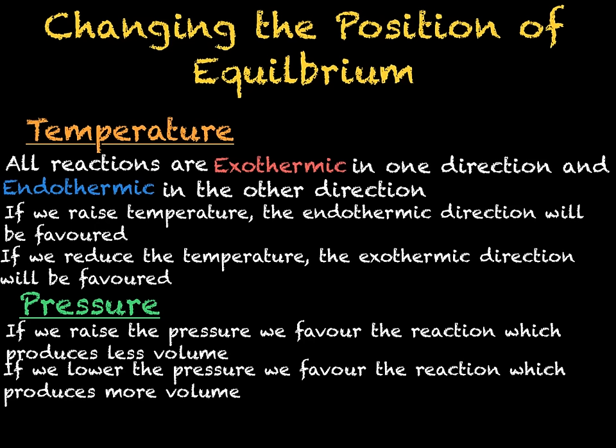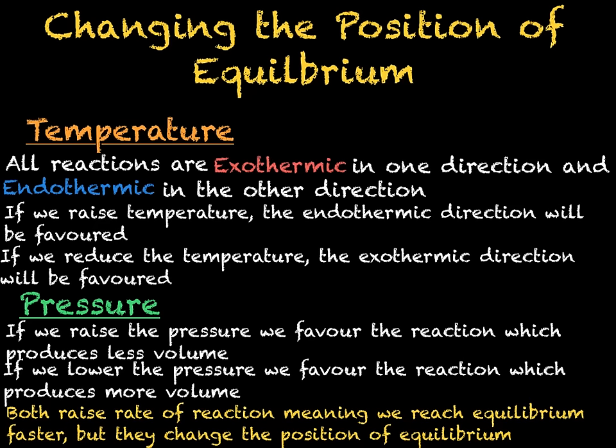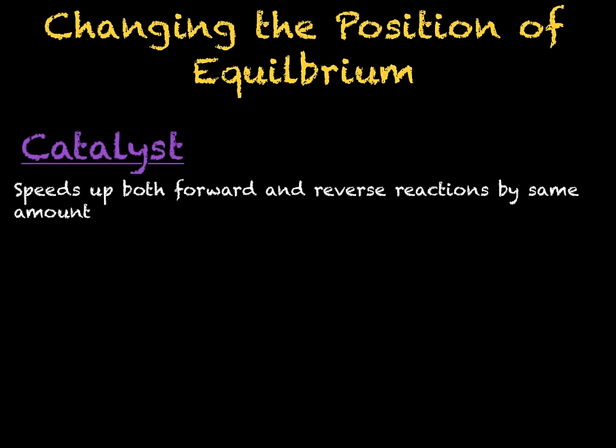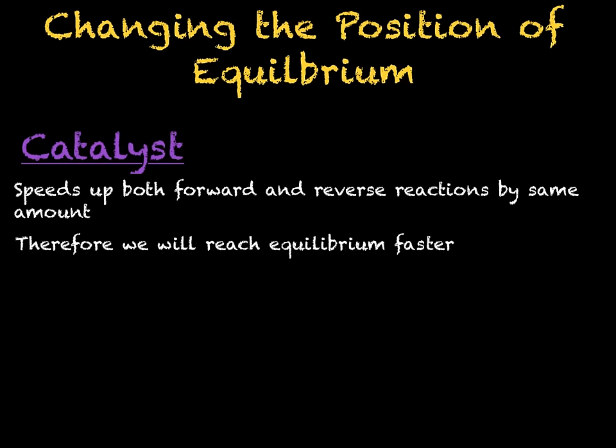Raising the temperature and pressure will also increase the rate of reaction, meaning that we will reach equilibrium faster. However, as they will also change the position of the equilibrium, this can result in less product. In order to speed up a reaction without affecting the position of equilibrium, we can use a catalyst. A catalyst will speed up both the forward and backward reactions by the same amount, meaning that we will reach equilibrium faster. However, we will still make the same amount of product as we would without the catalyst — we can just make it faster.